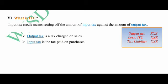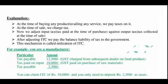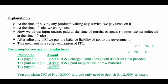Whenever you go to the market and buy or sell a product, you have to pay GST on it. The GST that you pay while purchasing a product is the input tax, and the tax you pay on sales is the output tax. At the time of buying any product or availing any services, we pay taxes on it, and at the time of sale we charge tax. We then adjust input tax against output tax, and after adjusting ITC, we pay the balance tax liability to the government. This mechanism is called utilization of ITC.